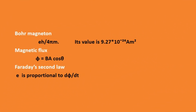Next is Bohr magneton. Its value is e·h by 4·pi·M, numerically equal to 9.27 × 10⁻²⁴ ampere·meter². Next is magnetic flux. Magnetic flux phi linked with a surface held in a magnetic field B is defined as the number of magnetic lines of force crossing the closed area: phi equal to B·A·cos theta.